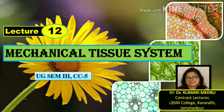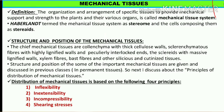Hello students, I am Dr. Minu from LBSM College, Karandi, Jamshedpur. In this video lecture, I am going to discuss mechanical tissue system and their role to give plant flexibility and strength. Mechanical tissues are the specialized organized tissues which give support and strength to the plants and their various organs. This is called mechanical tissue system. Haberlandt termed the mechanical tissue as sterome and the cells comprising them as steroids.